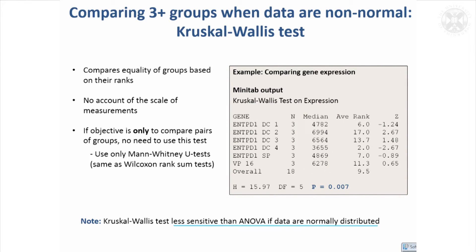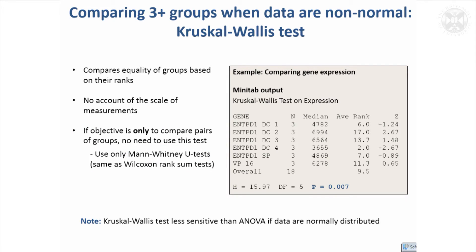When you have data that is satisfactory for a parametric test, the Kruskal-Wallis is less sensitive. Sometimes it may not be of interest to test whether all groups are the same — you might be justified in going straight to Mann-Whitney U tests, comparing just pairs of data. If you get a significant result, you would then do pairwise tests, which for non-parametric data would be Mann-Whitney U tests. Most basic statistical packages should have the Kruskal-Wallis test available.